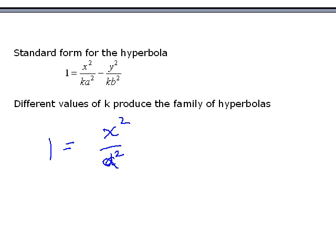Remember the standard form for hyperbola is 1 equals, I should use an alpha to avoid confusion, x² over α² minus y² over β². In this case the α is ka² and the β is kb².